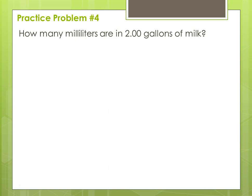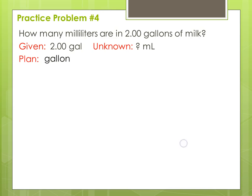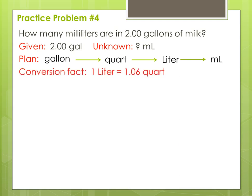Problem four: how many milliliters are in 2.00 gallons of milk? This is another dimensional analysis problem. The given is 2.00 gallons; the unknown is milliliters. Our plan: we can go from gallons to quarts, then from quarts to liters, and from liters to milliliters. Our conversion fact is that one liter equals 1.06 quarts. There are 1,000 milliliters in a liter.